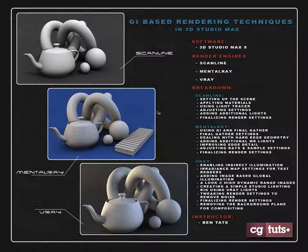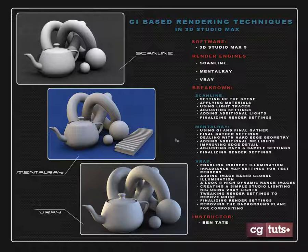Then we'll move into mental ray, which also ships with Max, and we'll look at using global illumination as well as final gather inside mental ray. We'll look at how to deal with hard edge geometry, since objects with really sharp edges can sometimes give you a problem when you do a GI render. We'll also look at some sample settings and how many rays to cast into the scene, adding some additional mental ray lights to get some color variation in our shading, and how to tweak out and finalize render settings to get a smooth result.